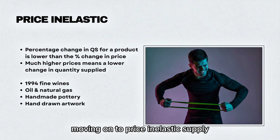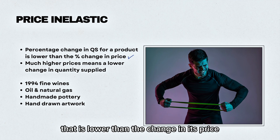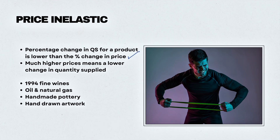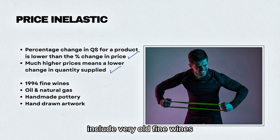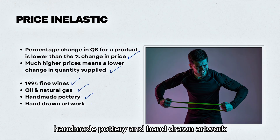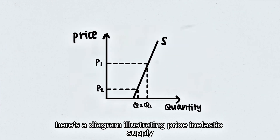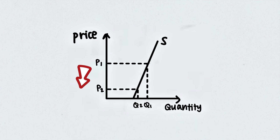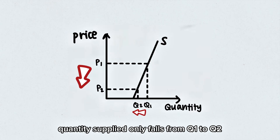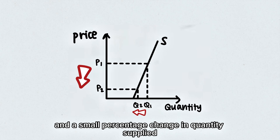Moving on to price inelastic supply. This is when the percentage change in quantity supplied for a product is lower than the change in its price. Despite much higher prices, there will be a lower change in quantity supplied. Some examples include very old fine wines, natural gases, oil, handmade pottery, and hand-drawn artwork. In the diagram, when price falls significantly from P1 to P2, quantity supplied only falls slightly from Q1 to Q2 — a large percentage change in price and a small percentage change in quantity supplied.